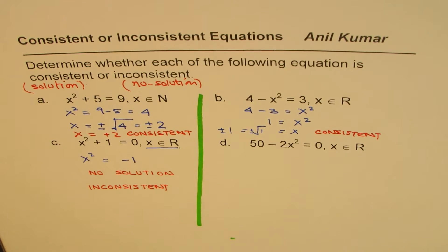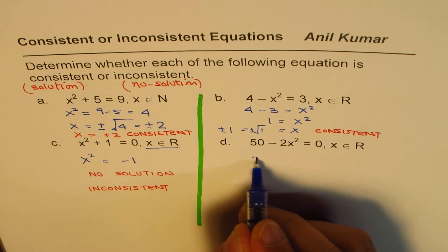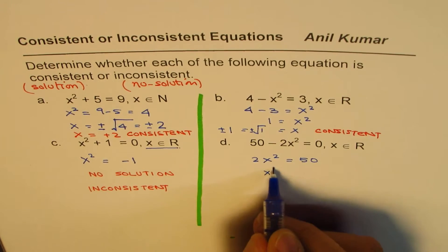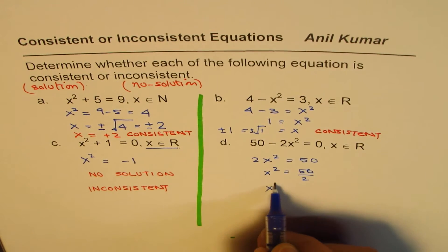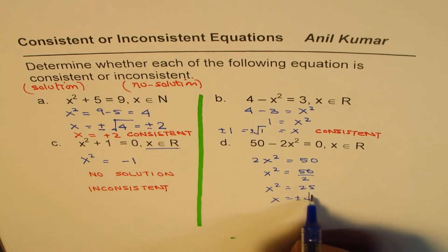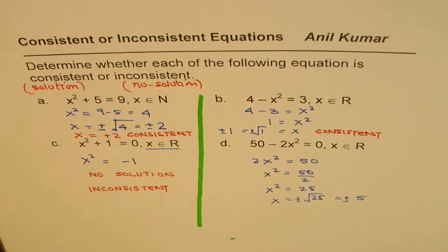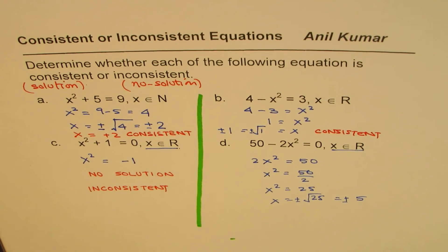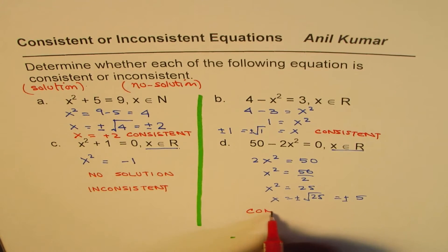The last one here is 50 minus 2x squared equals to 0. That means 2x squared equals to 50. x squared equals to 50 divided by 2. So x squared is 25. And x is plus minus square root of 25, that is plus minus 5. And both are real numbers. And therefore, we have a solution. So if we have a solution, we'll call this as consistent.